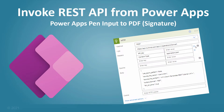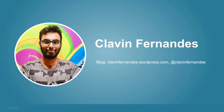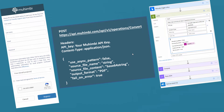Hello everyone and a very warm welcome to today's tutorial. We'll see how we can invoke a REST API from PowerApps, backed with a real-life demo in which you'll export a pen input or a signature into a PDF. My name is Clavin, I work as a technical consultant. You can find my blog at clavinfernandes.wordpress.com and my Twitter handle is at Clavin Fernandes. This is a continuation of a previous blog post — I'll leave the link in the description below.